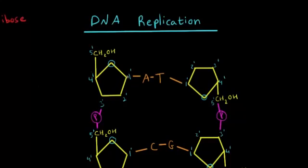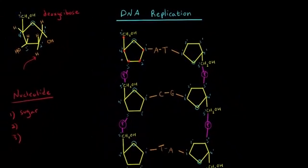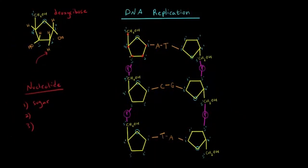And we'll label the carbons. This carbon is one prime, this carbon is two prime, this carbon is three prime, this carbon is four prime, and this carbon is five prime. And you may have noticed that the sugars in the two chains are actually oriented in opposite directions. So if you look at the sugar right here, for example, the oxygen is pointing upwards. But in the corresponding nucleotide on the other chain, it's pointing downwards. So the two chains are running in opposite directions, or another way to say this is they are anti-parallel to each other.